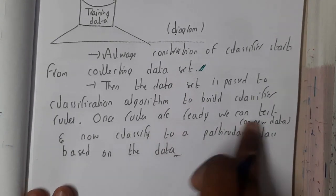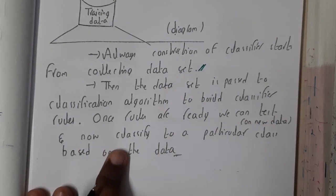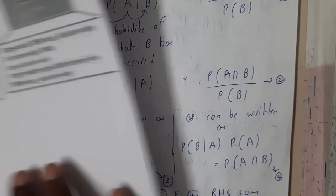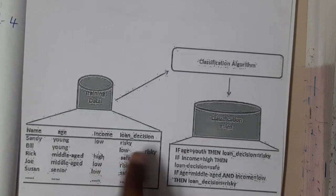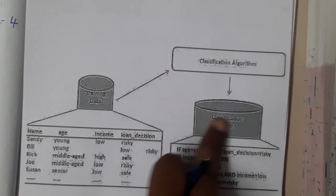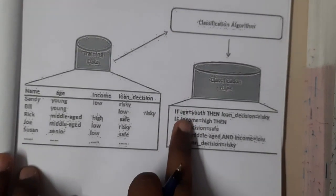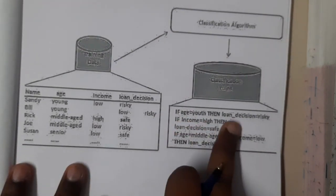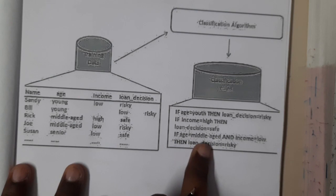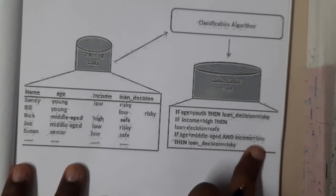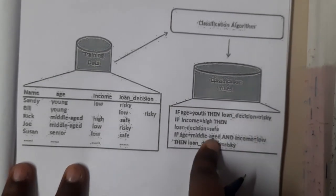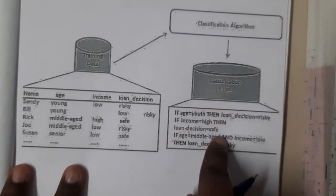Here is a small example diagram. This is your data which you push to the classification algorithm. It creates classification rules: if age is young then loan decision is risky, if income high then loan decision safe, if age middle-aged and income low then loan decision risky. Whenever you pass new information, it will check those conditions and say the result.